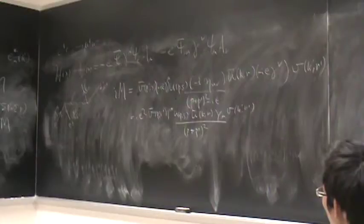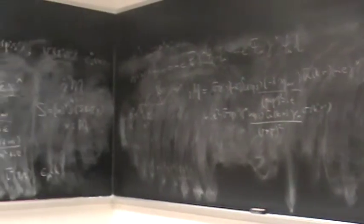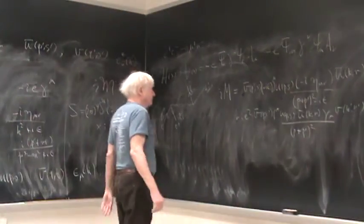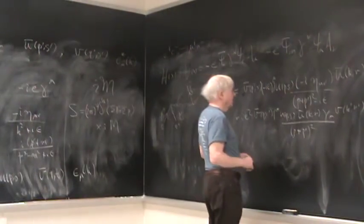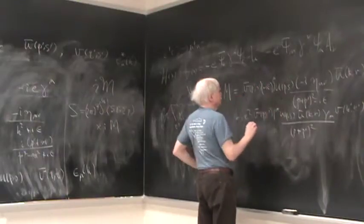So this thing is i e² v̄(p', s') γ^μ u(p,s) and now this η_μν is just going to lower this ν and make it a μ. So this is then ū(k,r) γ_μ v(k', r') and down here we can call it (p + p')².